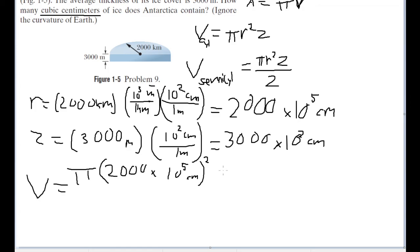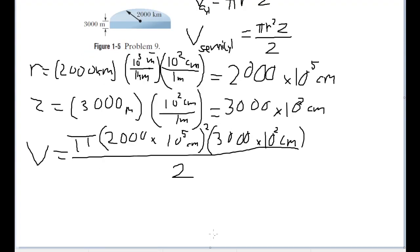Times the z times the height times the depth. So, 3,000 times 10 squared centimeters. And this whole thing is halved. And plugging this into your calculator, the answer you should get is that this is all equal to 1.9 times 10 to the 22 cubic centimeters.